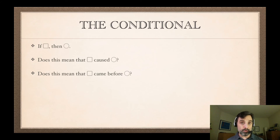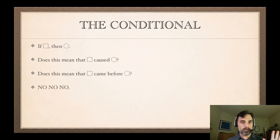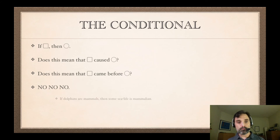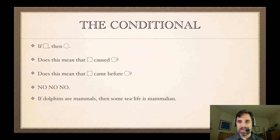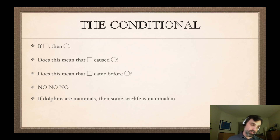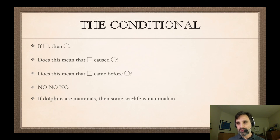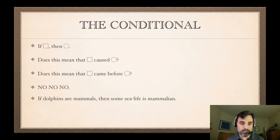Sometimes when a conditional is true, the antecedent comes before in time and causes the consequent. But that's not always the case — the conditional can be true without the antecedent causing the consequent. For example, 'if dolphins are mammals, then some sea life is mammalian.' There's no real temporal relation here — it's not that first dolphins were mammals and then some sea life was mammals. It doesn't look like there's any causal relation going on, or any antecedent being true before the consequent being true. Here it's not even clear that it makes sense to talk about causation or temporal relations.